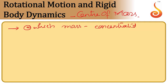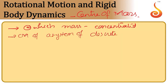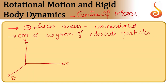Let us consider, first of all, the center of mass of a system of discrete particles. Consider a representation with x-axis, y-axis and z-axis. Consider particles m1, m2, m3 and so on. m1 has a position vector r1, m2 has a position vector r2, m3 has a position vector r3, etc.